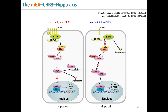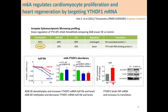With M6A modification and loss of CRUMBS3, the HIPPO pathway is turned off, leading to uninhibited cell proliferation, cell migration, cell invasion, and cancer progression. Patients with higher M6A have poorer colorectal cancer prognosis and survival.